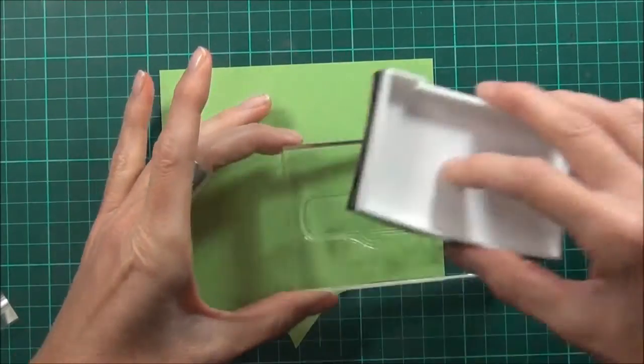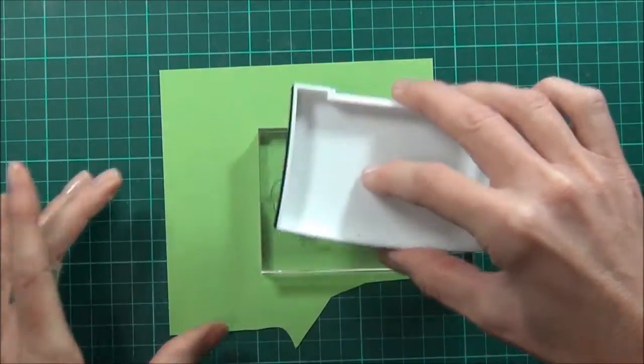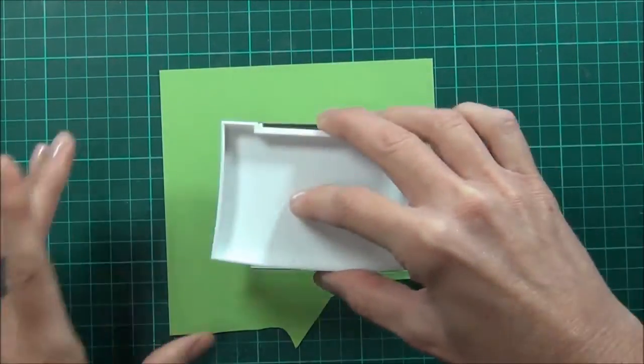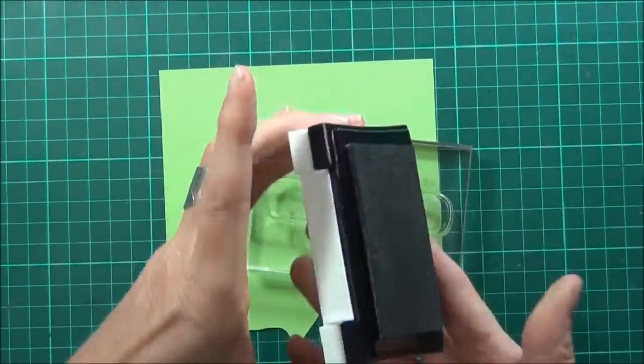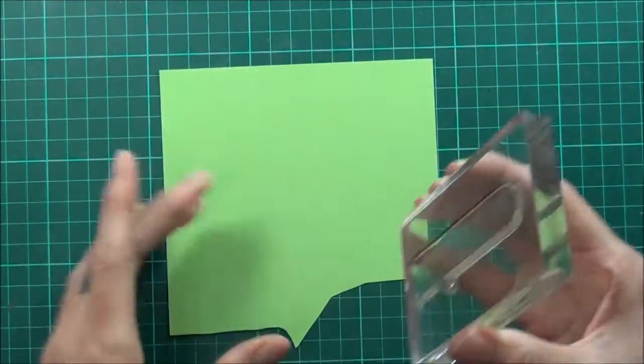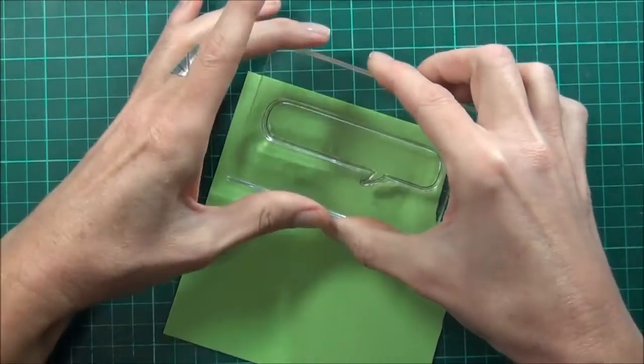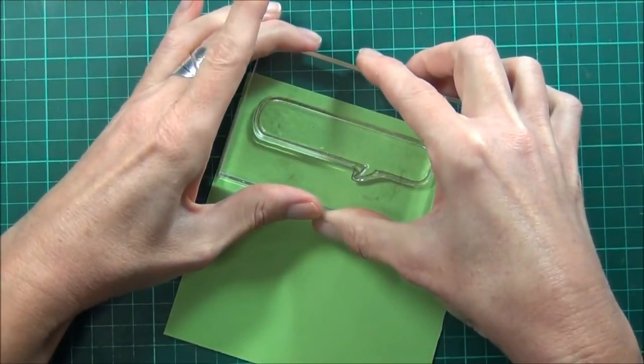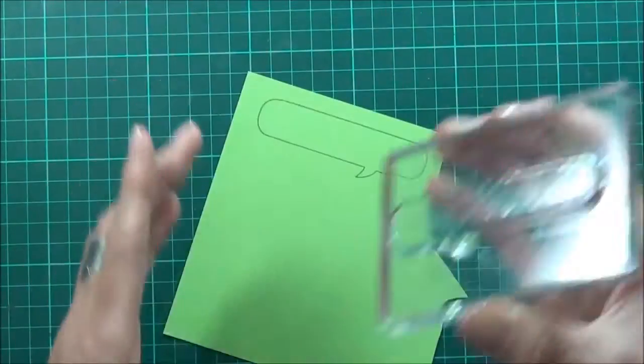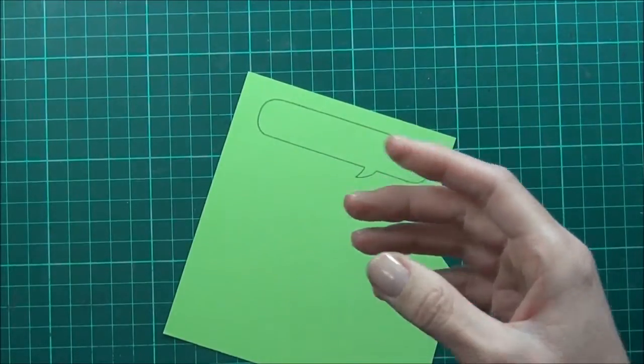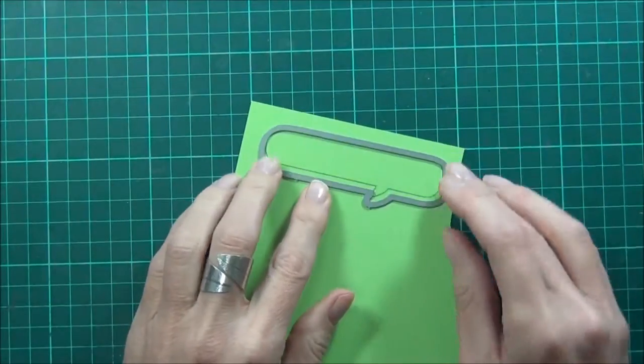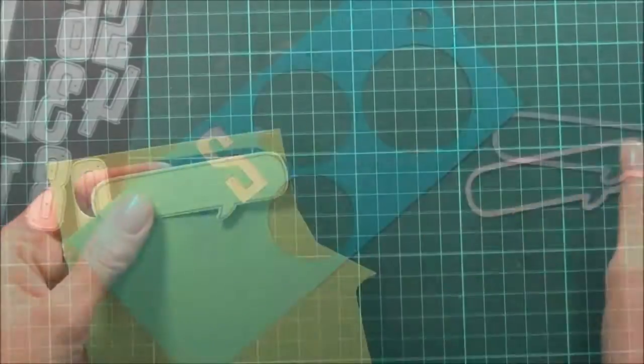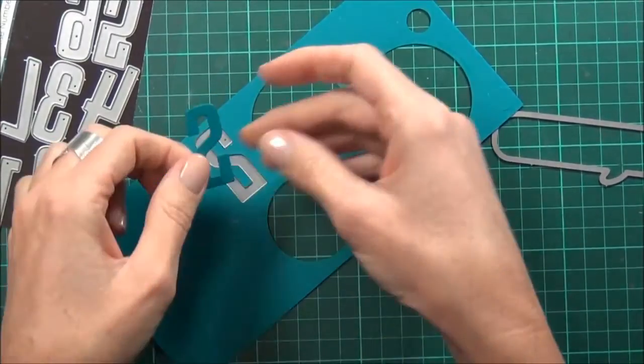Now to start my little marathon, I've got some smoky grey ink and one of the speech bubbles from Lawn Fawn's A Birdie Told Me stamp set. I'll stamp that and then use one of the matching dies and run that through my die cutting machine.